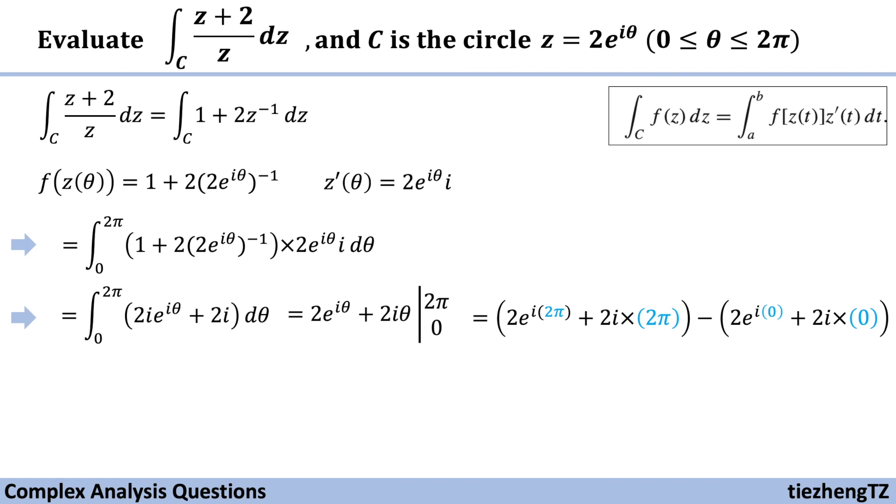We know e to the power of i times 2 pi is 1, and e to the power of i times 0 is also 1.